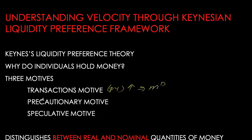People always want to hold some money against unexpected wants, and this precautionary motive is again proportional to their nominal income. So higher the nominal income, higher will be the demand for money balances.